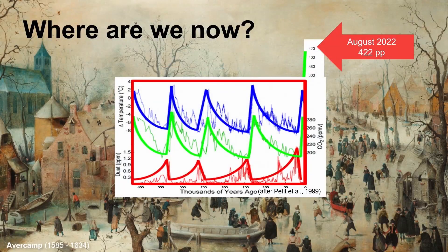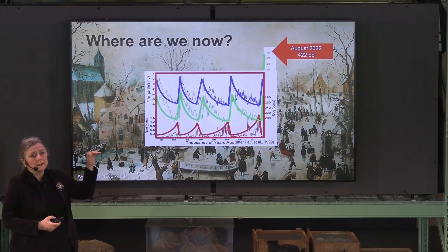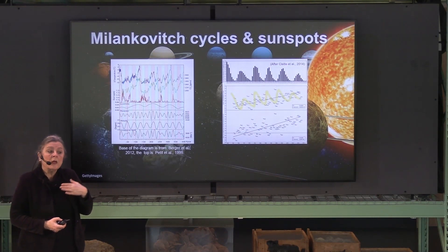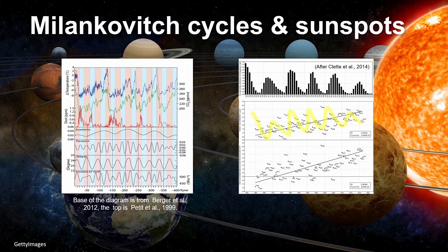Where are we in that cycle right now? We are beyond the interglacial maximum. We have had a period of cooling — the Little Ice Age — and our CO2 emission is far beyond the ceiling of 300 parts per million that we know of normally. It can't be the Milankovitch cycles, because when you have highest eccentricity, you don't have highest temperature or highest emission — it influences but doesn't drive it. Looking at sunspots, they have a periodicity of 11 years, going slightly down in intensity, while our CO2 emission is increasing. So something else is going on.